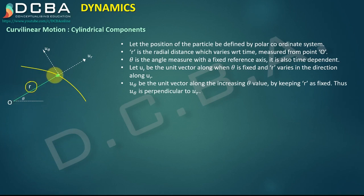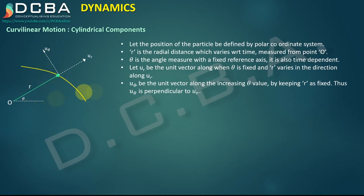If we keep r fixed and increase θ, the particle traces a circle of radius r. At the particle's position, the unit vector uθ must be given as a tangent to that circle. Therefore, when r is fixed and θ increases, uθ will always be perpendicular to ur. This can also be proven mathematically.